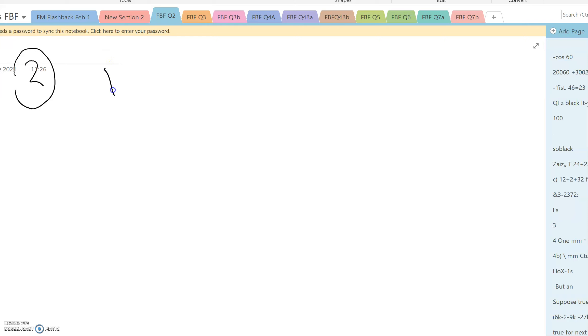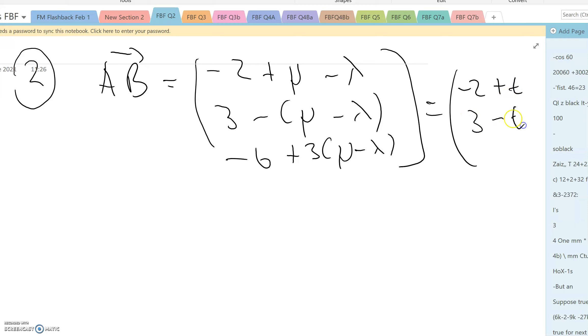So we can say that AB, if A is a point on L1 and B is a point on L2, then AB is equal to minus 2 plus mu minus lambda, 3 minus mu minus lambda, and minus 6 plus 3 mu minus lambda, which can be simplified to minus 2 plus t, 3 minus t, and minus 6 plus 3t.